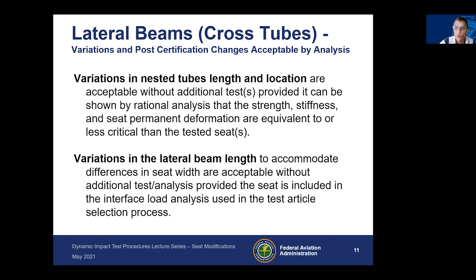If you have a nested tube, you can change the variation of that nested tube. If you're changing the length and location and can show that strength, stiffness, and permanent deformation are equivalent or less critical than the tested seat, that is acceptable. Variation of the lateral beam length to accommodate differences in seat width is acceptable, provided the seat is included in your interface load analysis. This may apply when looking at a seat installation in a tapered section where you need to change the width of a seat place.